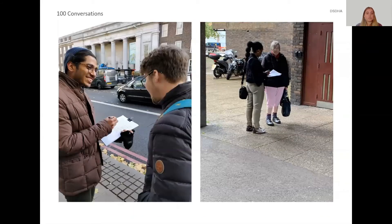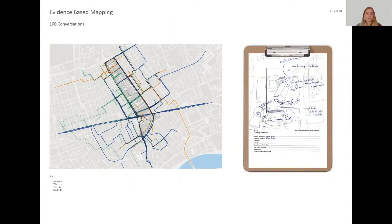In-person research, such as the 100 Conversations that our studio does, could give you more insight into what the area feels like for people who live and work there. We usually try to go to site and ask locals a few simple questions: where they are going, how they will get there, what do they think about the area or that street. You can then highlight all of those journeys on the map and see if any patterns are emerging. You may identify places that locals avoid, or places and streets that are much busier and more popular. You can also highlight places that locals identify as areas that could be improved.